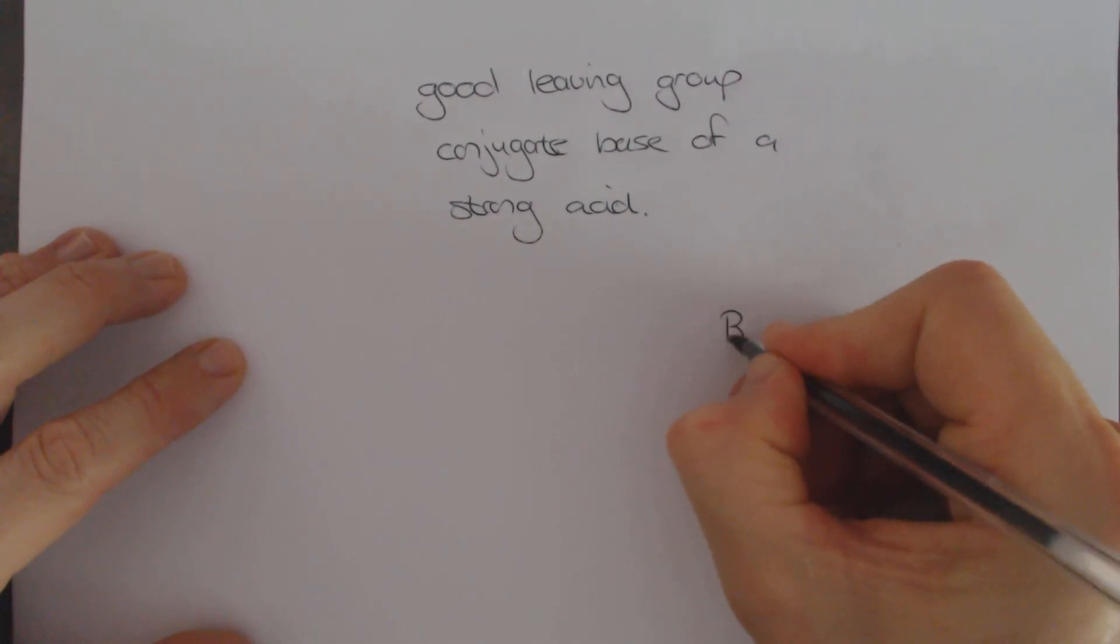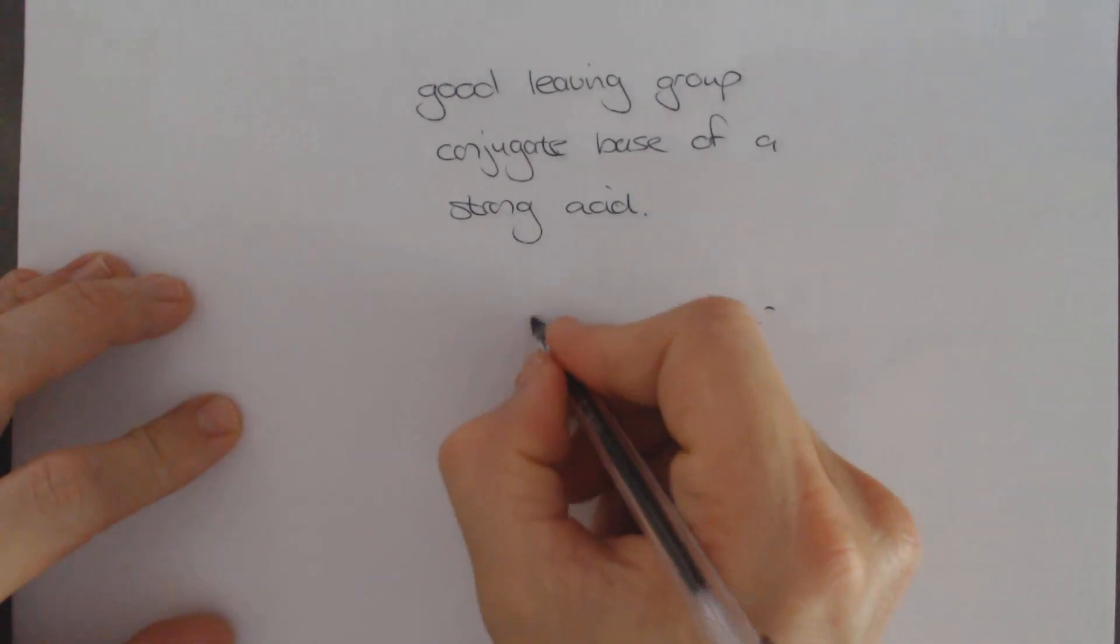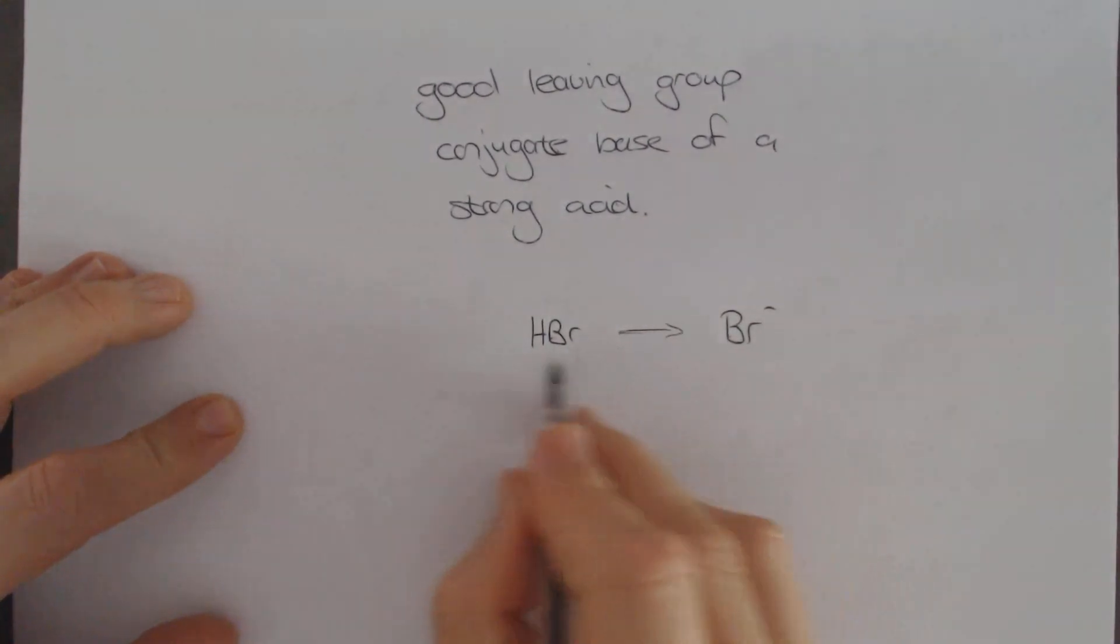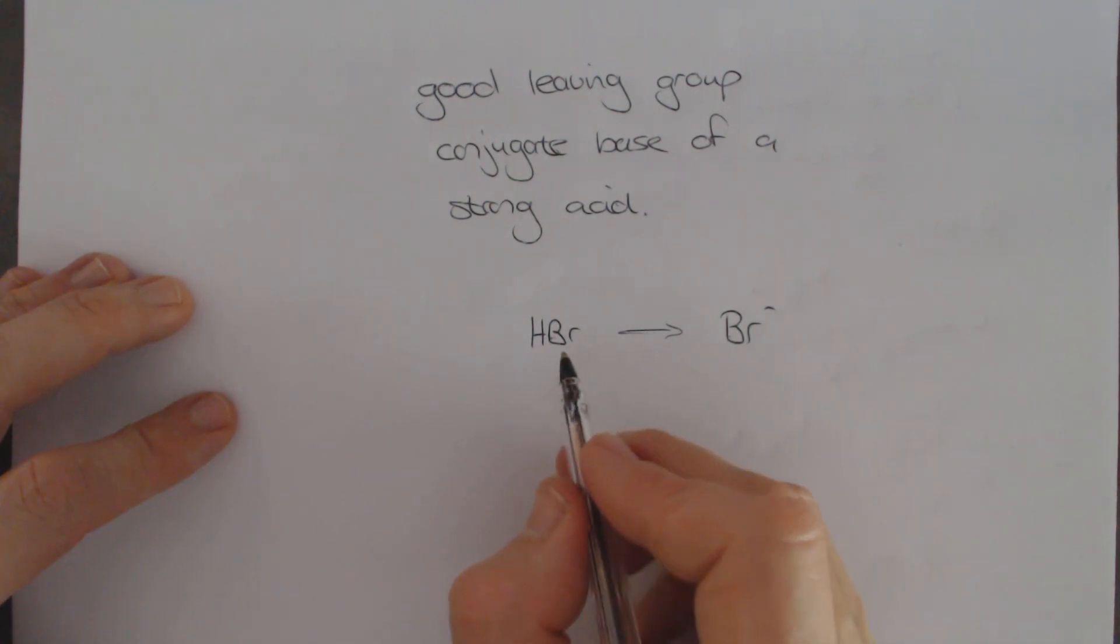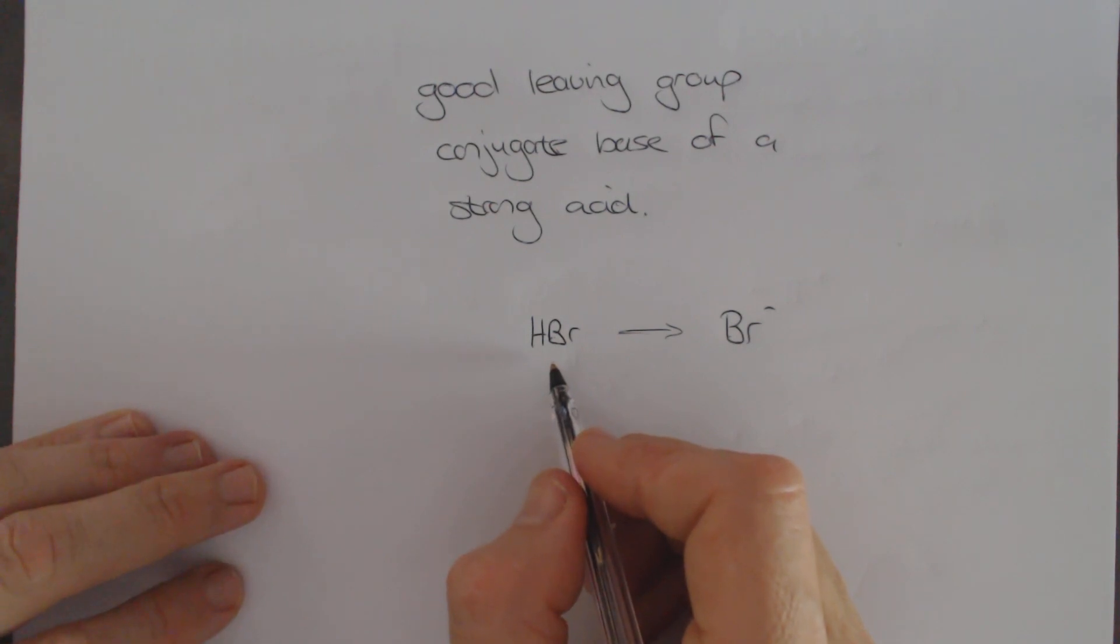A good leaving group is the conjugate base of a strong acid. We've seen that Br- is a good leaving group. Why? Because it's the conjugate base of HBr, which is a strong acid. It wants to donate its proton. So this is the conjugate base. It's a weak base. Therefore it is a good leaving group. Bromine, chlorine, iodine, they're all parts of very strong acids, good leaving groups.